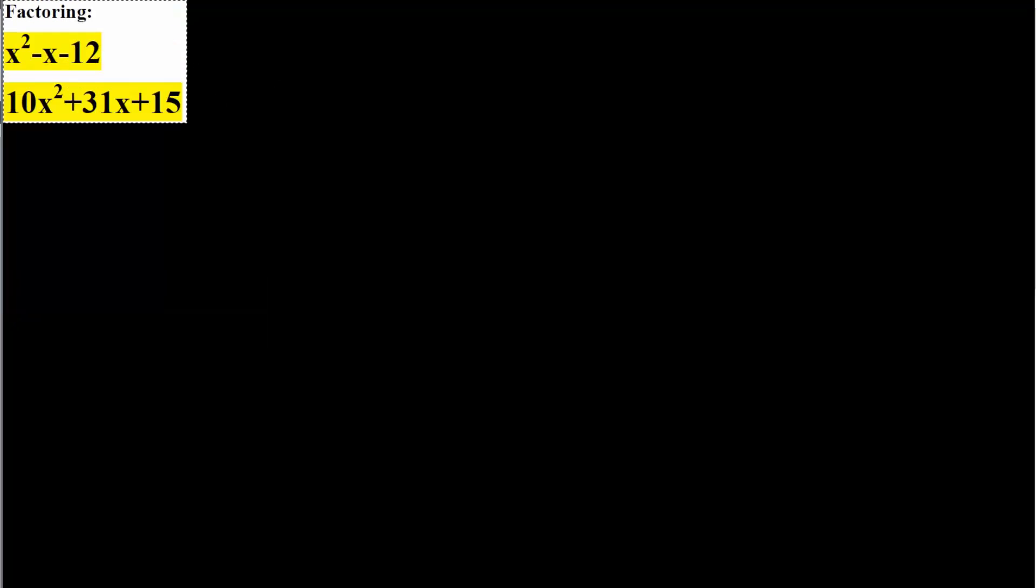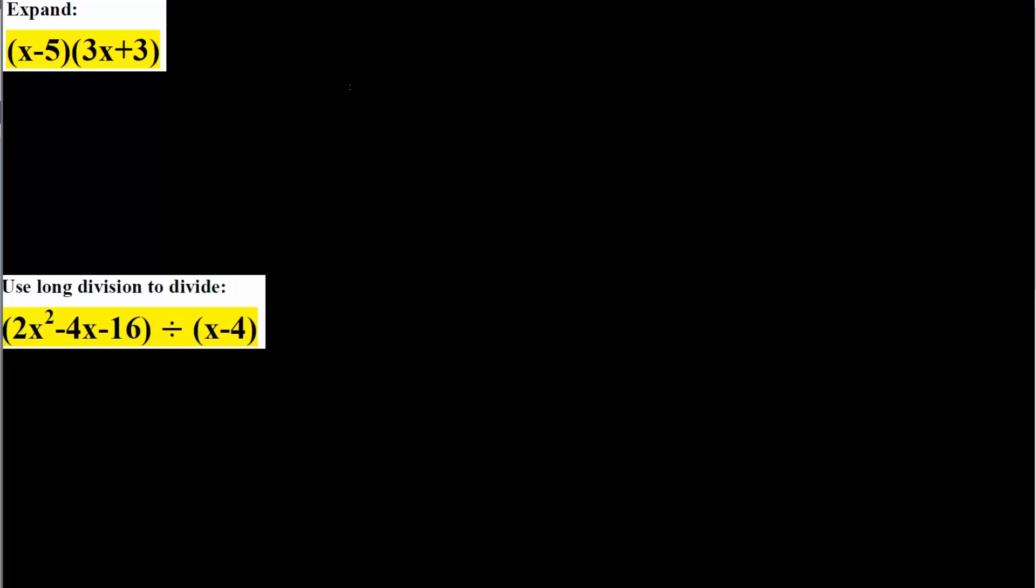So the first thing we're going to do is expand. So we have x minus 5 times parentheses 3x plus 3. And so whenever we expand, we take this x and we multiply by each component. So times 3x plus x times the 3.